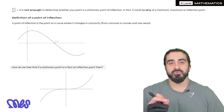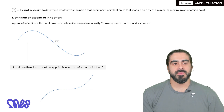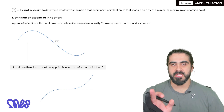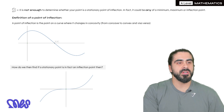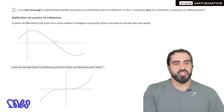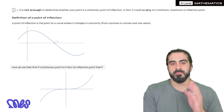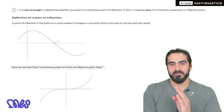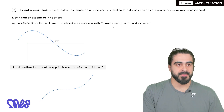Here is the real definition of a point of inflection — not necessarily a stationary point. A point of inflection is the point on a curve where it changes in concavity, i.e., from concave to convex and vice versa.